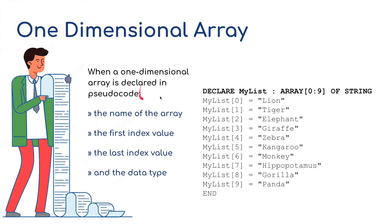When a one dimensional array is declared in pseudocode, the name of the array, in this case my list, appears. Also, we've got the first index value in the array, which is 0, representing lion. And we've got the last index value, which is at position 9, which would be the panda. It also tells us about the data type, and in this case we've got a string. These are words that have been stored in our list, in our array.